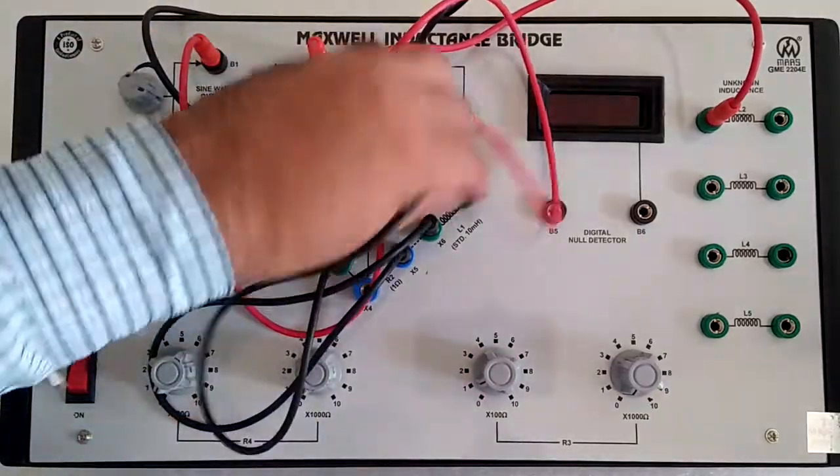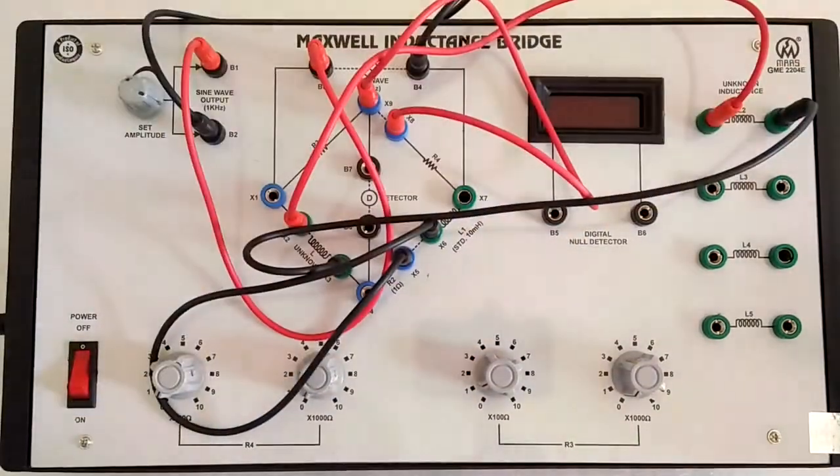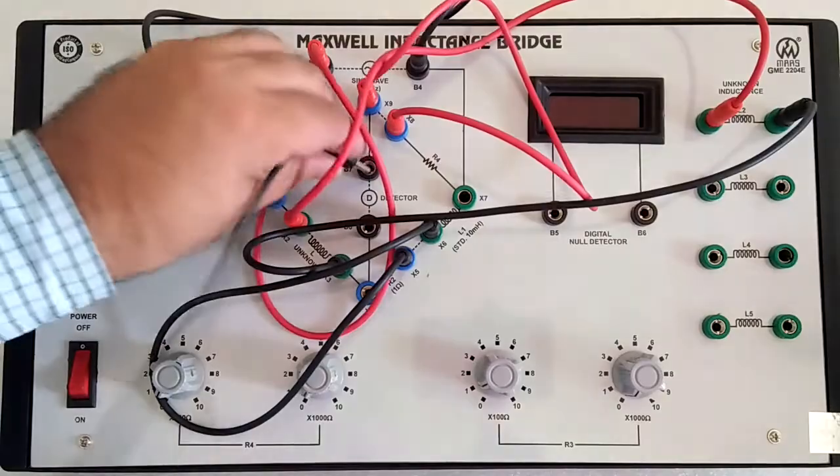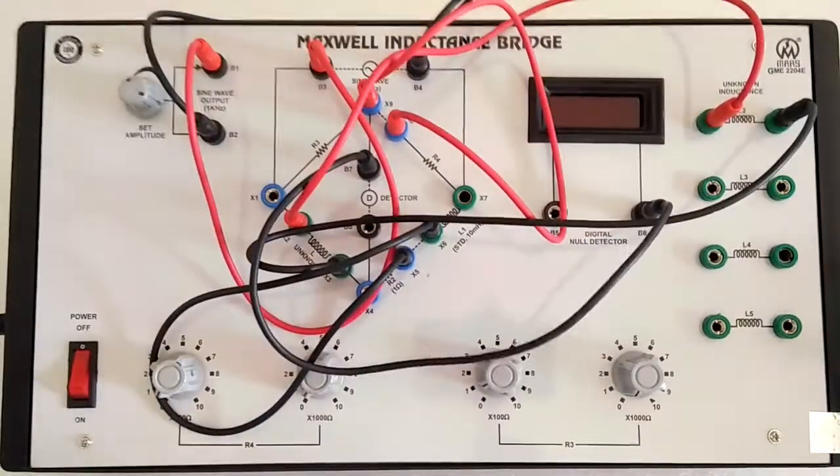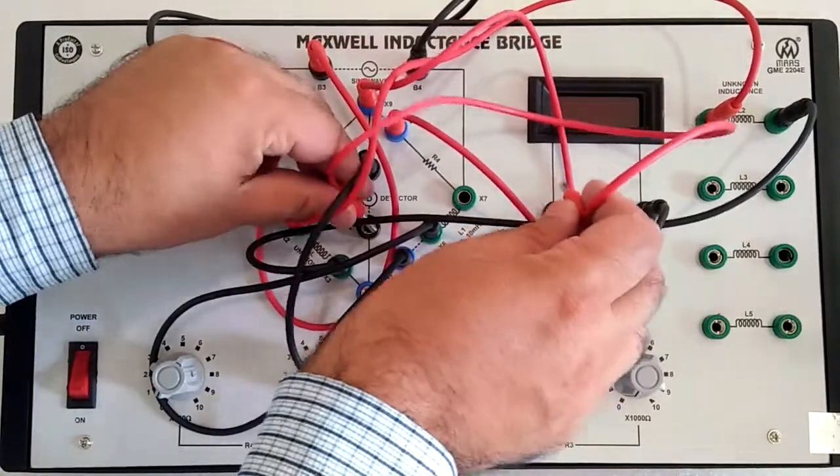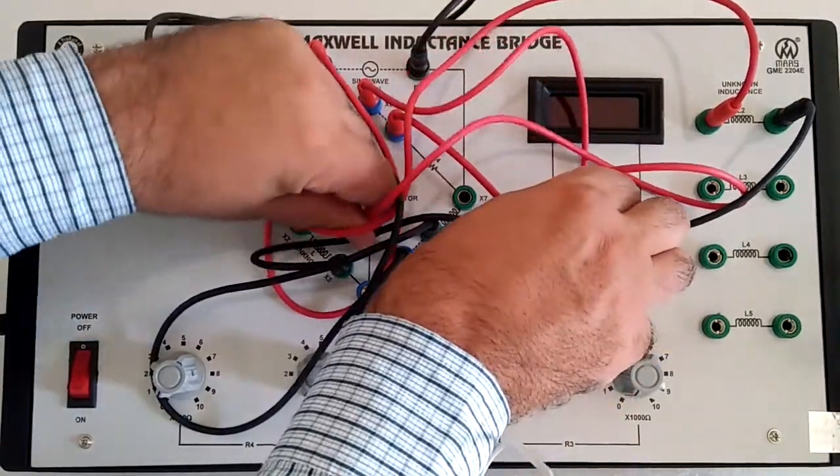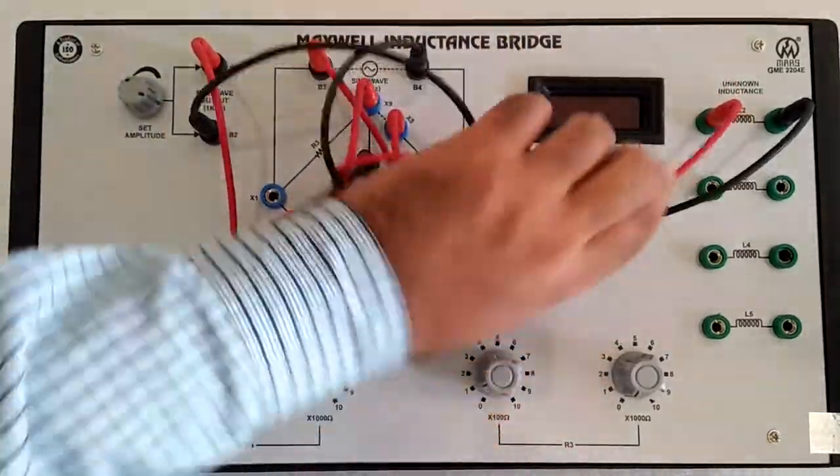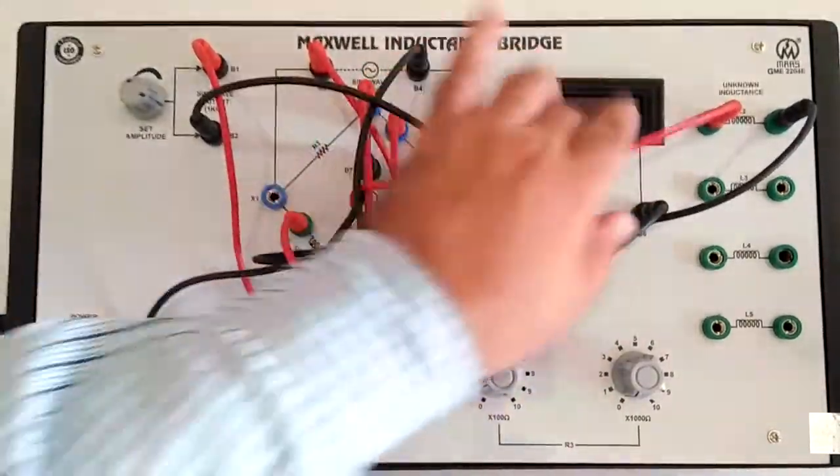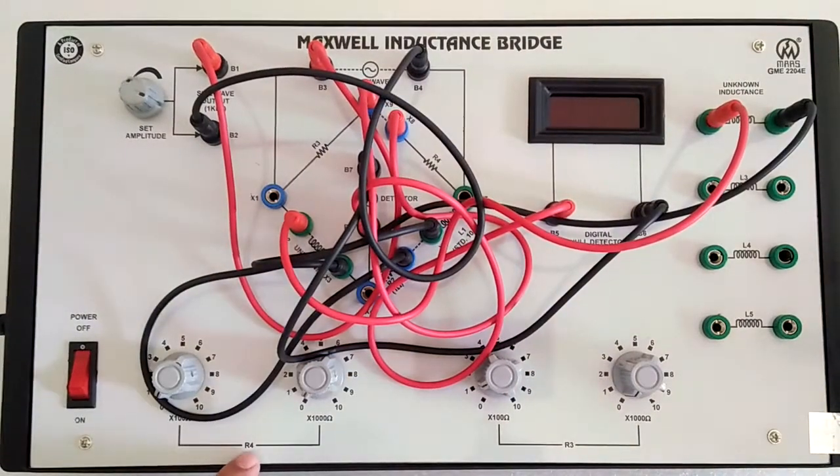Here we have standard inductance L1 value 10 millihenry. Here is the detector connection. Now all the connections are completed. You have to balance the bridge for the resonance point or the minimum point with the help of R3 and R4.